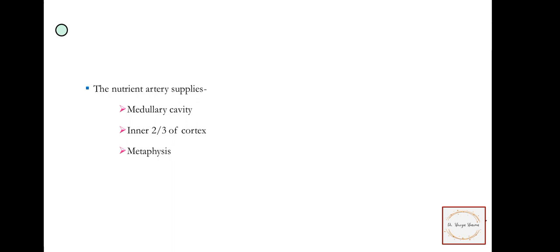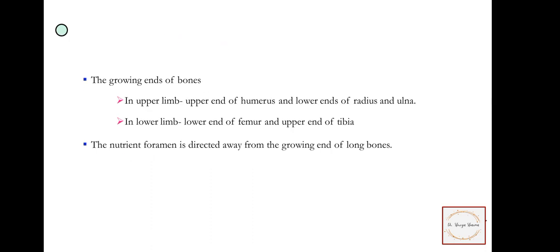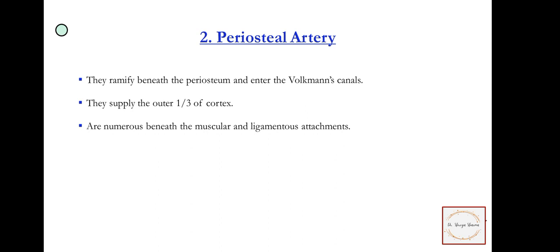The nutrient artery supplies the medullary cavity, inner two-thirds of cortex, and the metaphyses. In the upper limb: upper end of humerus and lower end of radius. In the lower limb: lower end of femur and upper end of tibia. The nutrient foramen is directed away from the growing end of long bones.